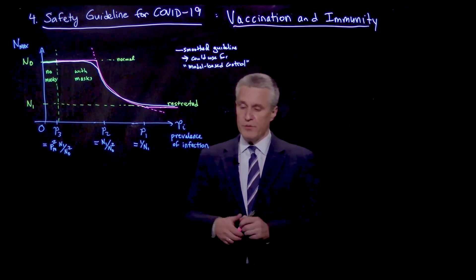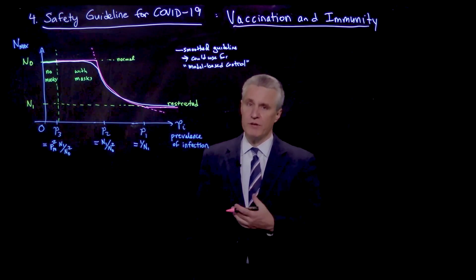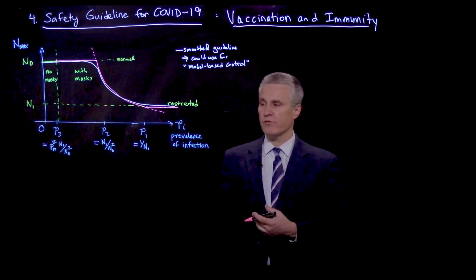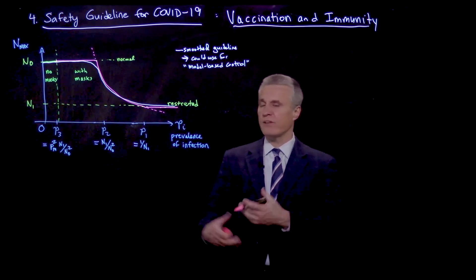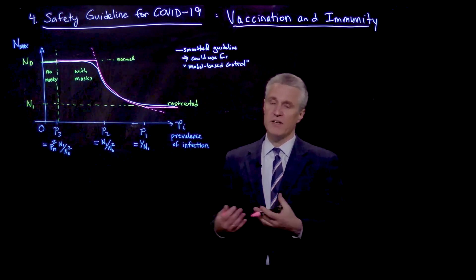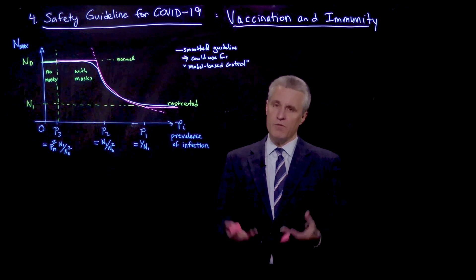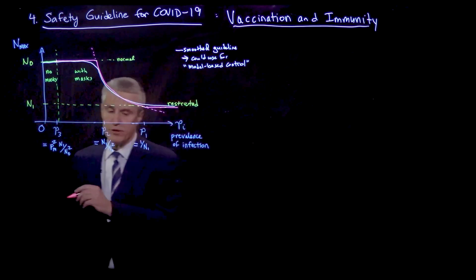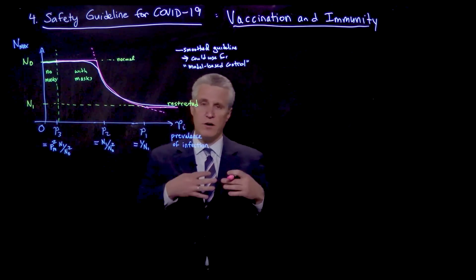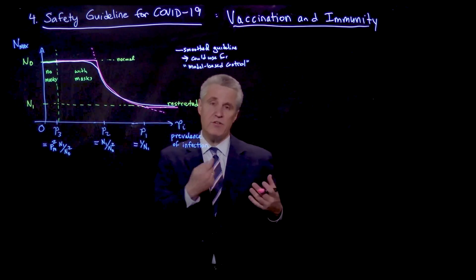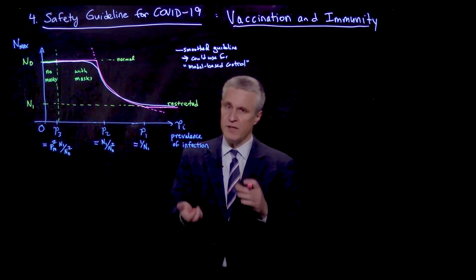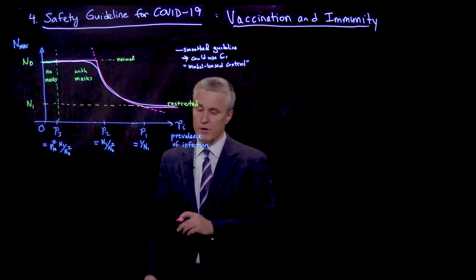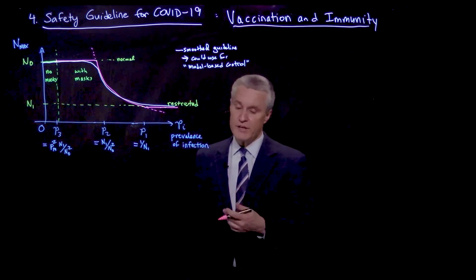Let's think about how we would take susceptibility into account. In some sense, our previous approach was a conservative estimate of the true risk of transmission, because we assumed that everyone who's not infected is susceptible. But as immunity increases in the population, we need to modify that. So instead of a two-category process of susceptible and infected persons, we can think of three categories.